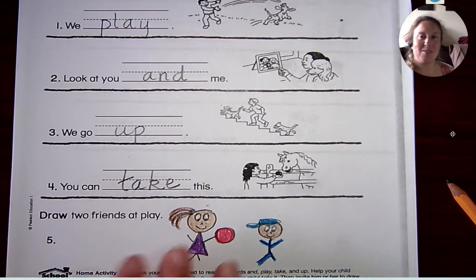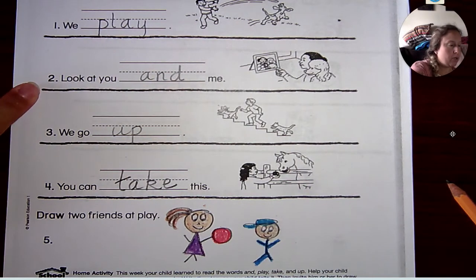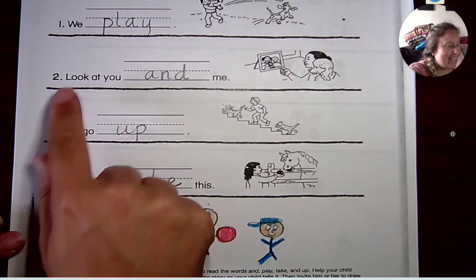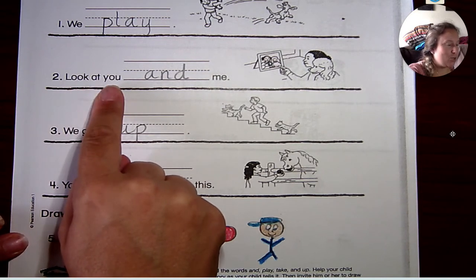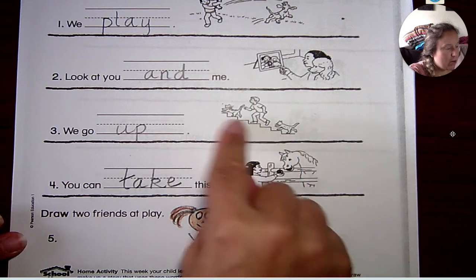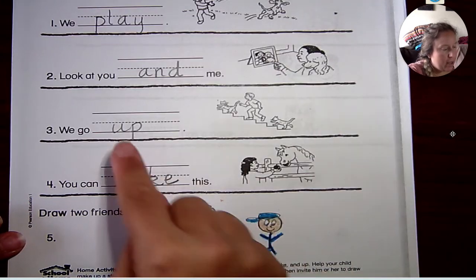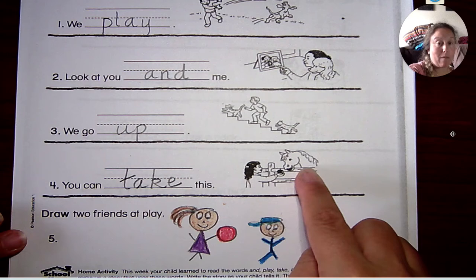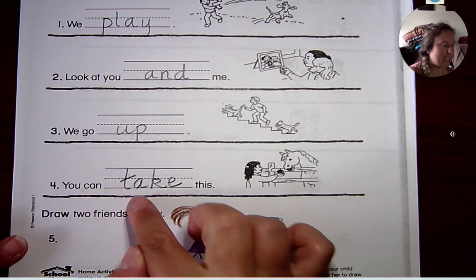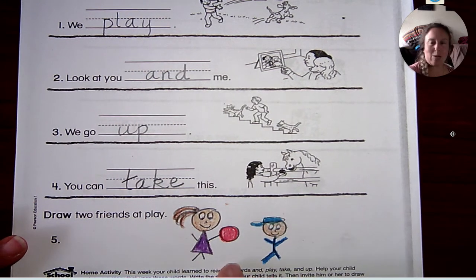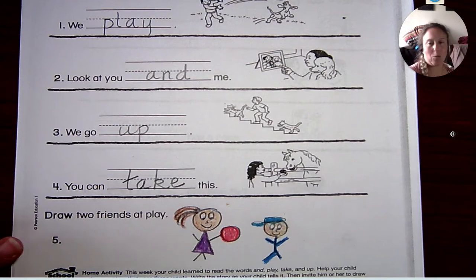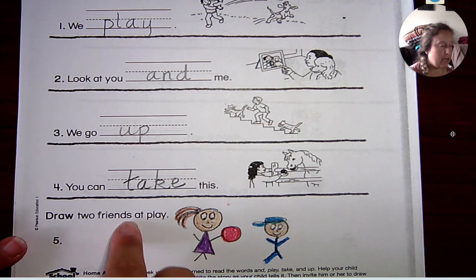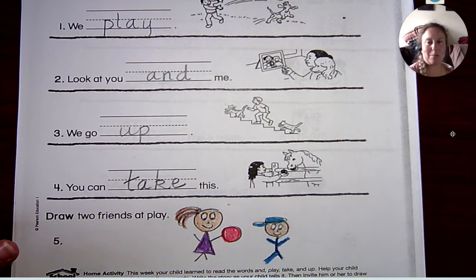Ta-da! Back! Okay, so for number two, we had, if I looked at the picture, it was a picture of a poodle and the person who owns the poodle. And she's suggesting that they look at you and me. If I look at this picture, I can see that the two cats and the boy are going up. We go up. And then lastly, I see that she's handing this apple to a very happy horsey, and so she's saying, you can take this. Now down here at the bottom, I drew me and you, and we are playing ball at recess, because it asks us to draw two friends at play. And so I drew two friends at play. It's you and me.